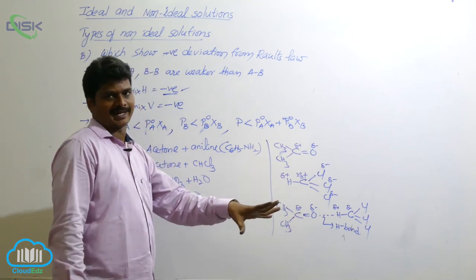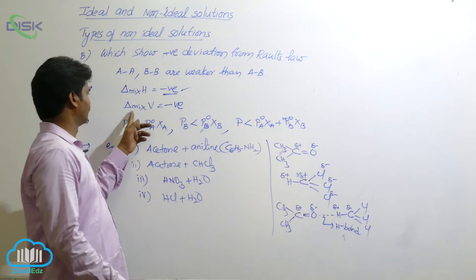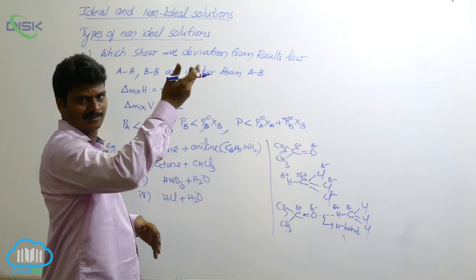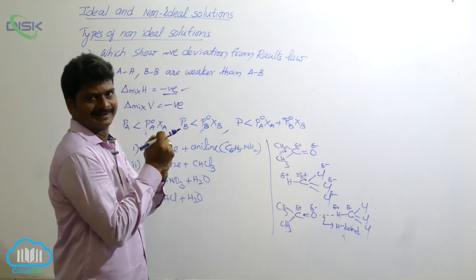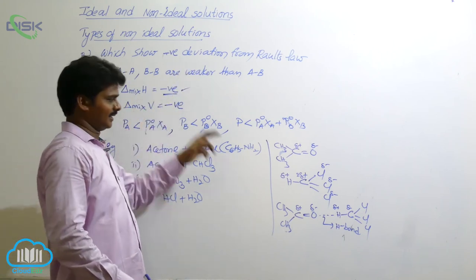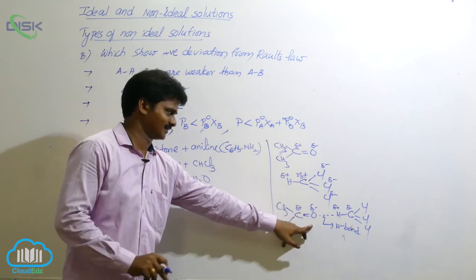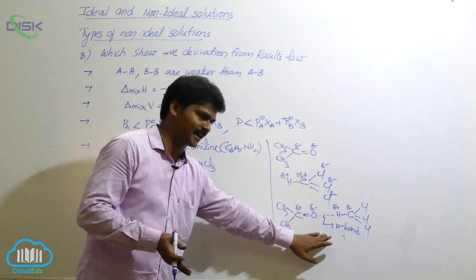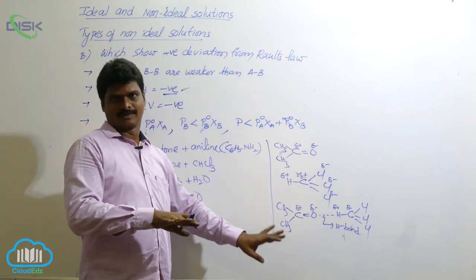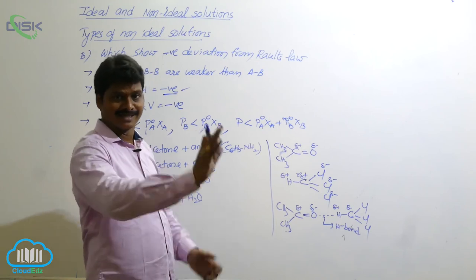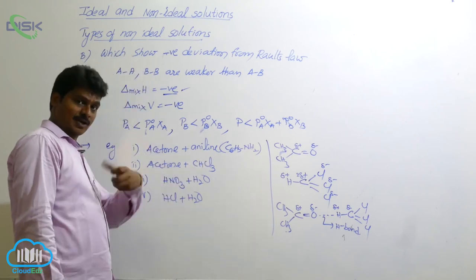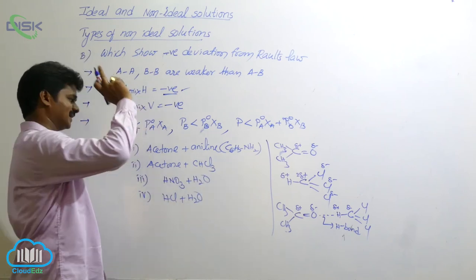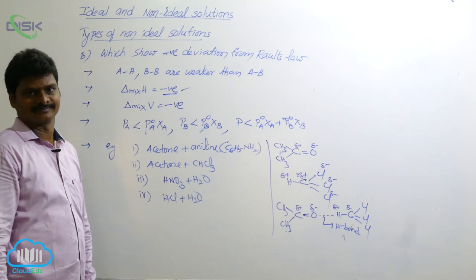So in place of weaker attractions, stronger attractions exist. Because of strong attractions, volume change on mixing (ΔV) is negative, because the molecules have lesser tendency to escape — molecules are tightly held. Similarly, since these interactions are stronger — weaker interactions are broken and stronger interactions are formed — more energy is released than the energy required. So enthalpy of mixing is also negative.